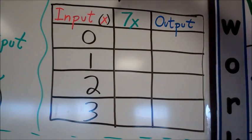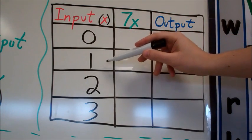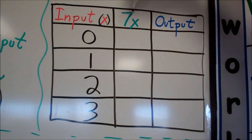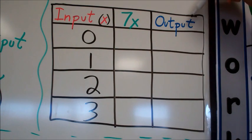In our second example, we have four inputs now: 0, 1, 2, and 3 to put into our function machine. Our function machine this time is different. It's 7x. Remember, when the number is directly next to the variable, you're multiplying. And then we have to find our output.